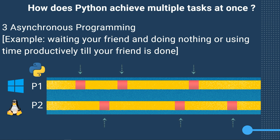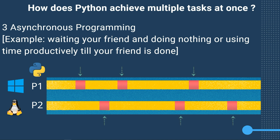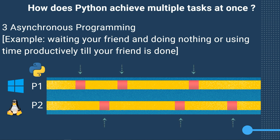Let's imagine you call your childhood friend to hang out, but he tells you he's at work and will finish at 5 p.m. There are two scenarios: either you wait on your couch until 5 p.m. doing nothing — that's the synchronous approach — or you use your time productively doing other stuff until 5 p.m., which is the asynchronous approach.